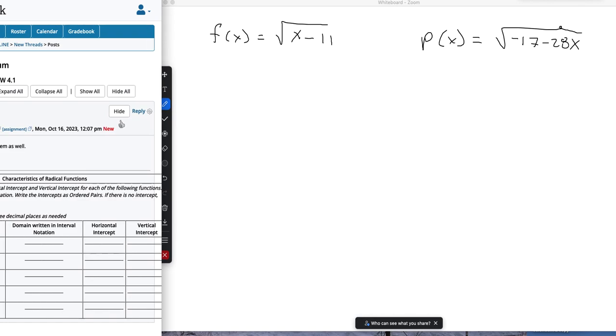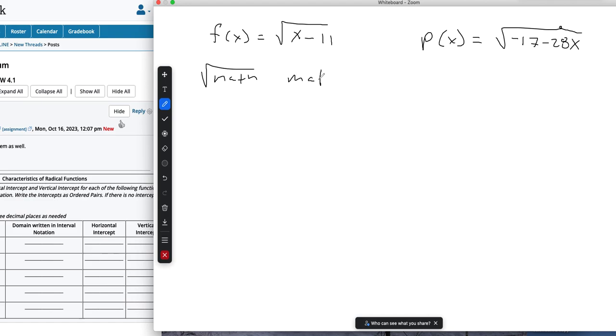So domain first. To find the domain of any radical function, whatever the math is under the radical, you're going to take the math and it's going to be greater than or equal to 0. And that's because if you think about a square root, I can't take the square root of a negative number. That doesn't exist. It's imaginary.